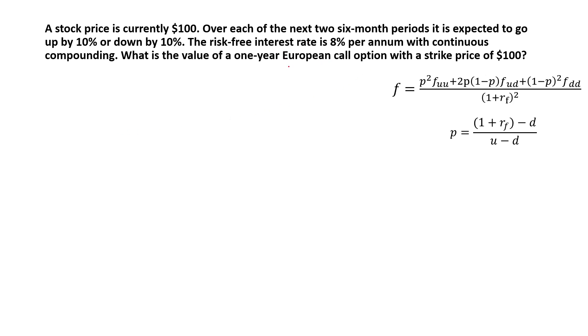Now, the important thing here is that we're dealing with a European call option. Call option is when you make money when the share price is higher than the strike price. And this is a two-step binomial tree because this is a one-year call option, and we're talking about two six-month periods. So let's draw the binomial tree.